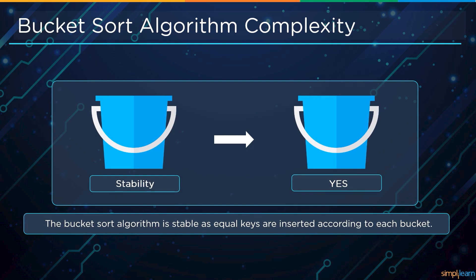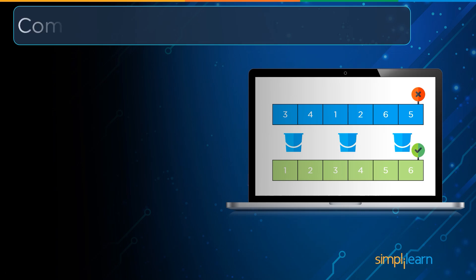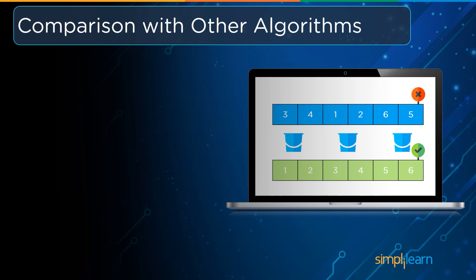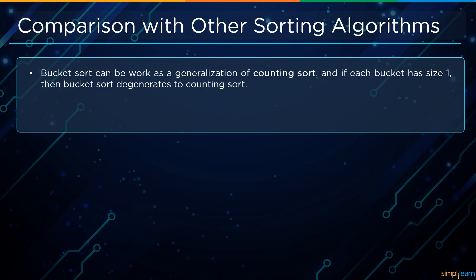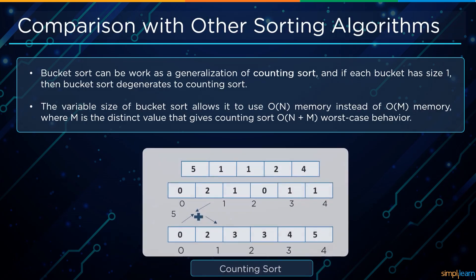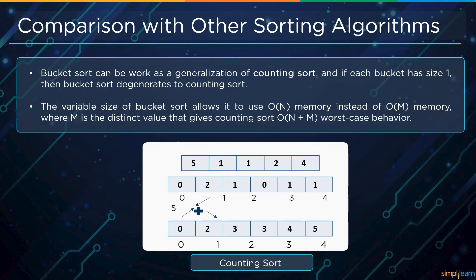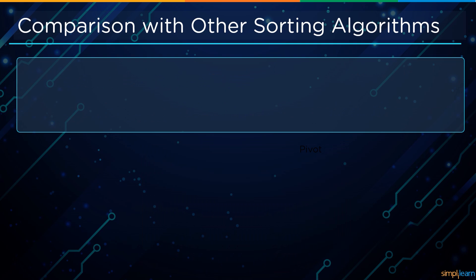Now we will compare bucket sort with other algorithms. Compared to counting sort, bucket sort can be seen as a generalization of counting sort — if each bucket has size one, bucket sort degenerates to counting sort. The variable bucket size allows bucket sort to use O(n) memory instead of O(m) memory, where m is the number of distinct values, giving counting sort O(n + 1) worst-case behavior.